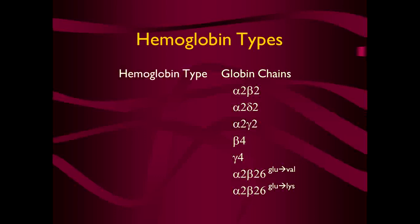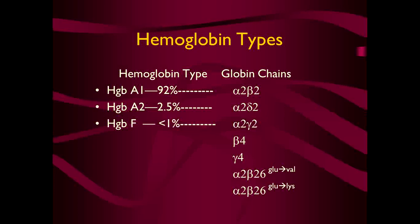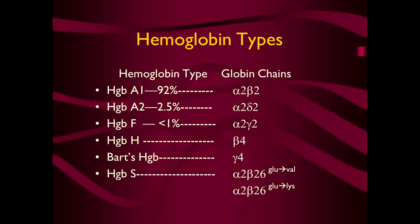Hemoglobin A1 is 92% with alpha-2 and beta-2 chains. Hemoglobin A2 is 2.5% with alpha-2 and delta-2 chains. Fetal hemoglobin is 0.5-1% with alpha-2 and gamma-2 chains. Hemoglobin H is beta-4 chains, and Bart's hemoglobin is gamma-4 chains. Hemoglobin S has alpha-2 and beta-2 chains but with substitution at position 6 where valine replaces glutamic acid. In hemoglobin C the chains are also alpha-2 and beta-2, but lysine replaces glutamic acid at the same position.